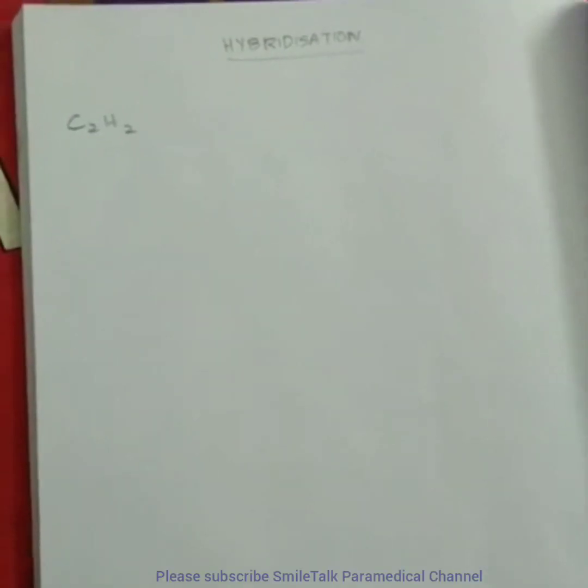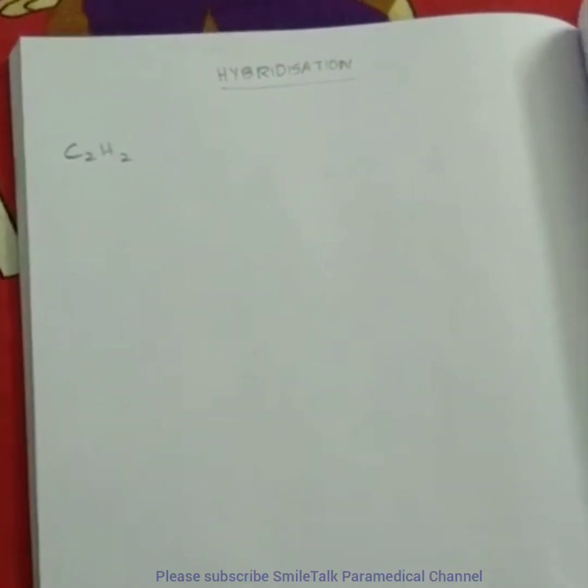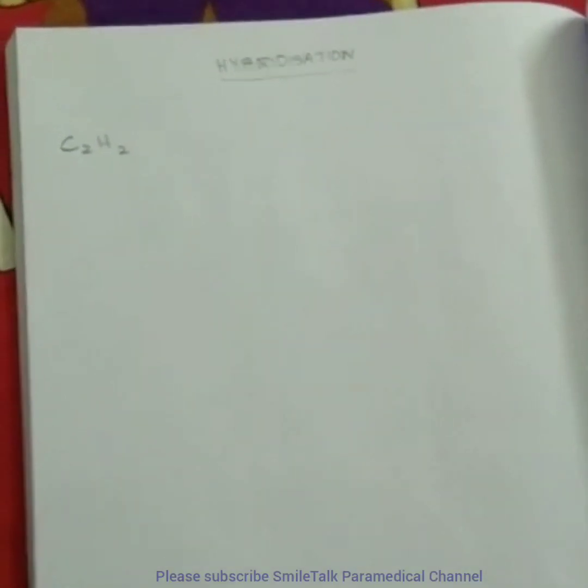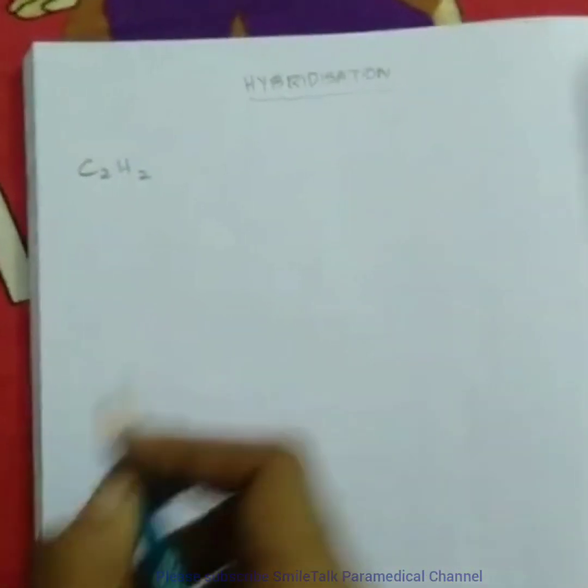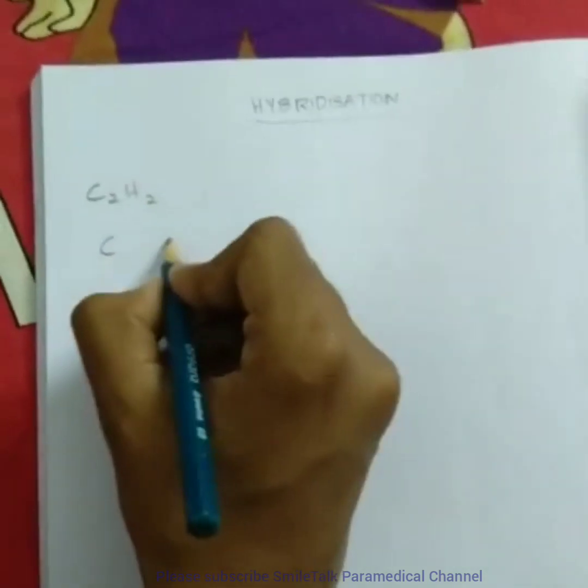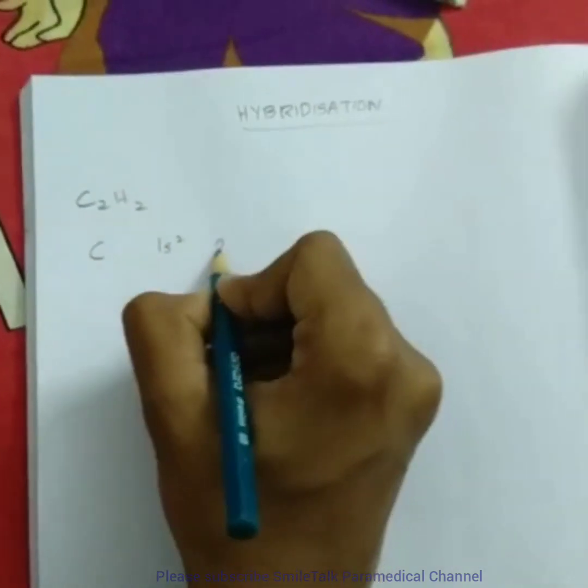We are going to study hybridization. Let's take the example C2H2. Carbon has the electronic configuration 1s2 2s2.